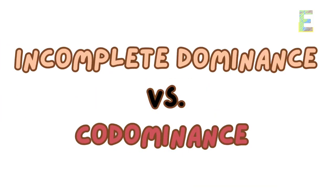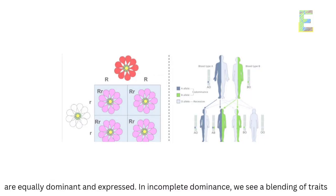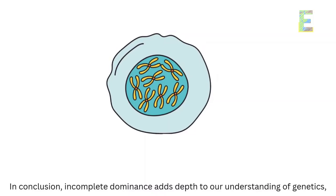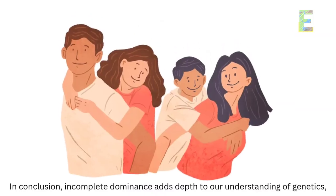Incomplete dominance versus codominance: it's essential to distinguish incomplete dominance from codominance, where both alleles are equally dominant and expressed. In incomplete dominance, we see a blending of traits. In conclusion, incomplete dominance adds depth to our understanding of genetics, showcasing the beautiful complexities of inheritance.